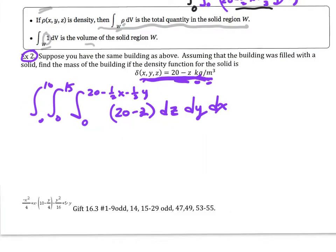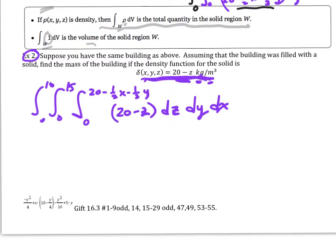I start by taking the antiderivative with respect to z on this inside here. I get 20z minus z squared over 2. I'm going to evaluate that from 0 to 20 minus one half x minus one third y. When I do plug that in for both of these I do get what I have down here. So that's why I put it there so I could take care of business that way.